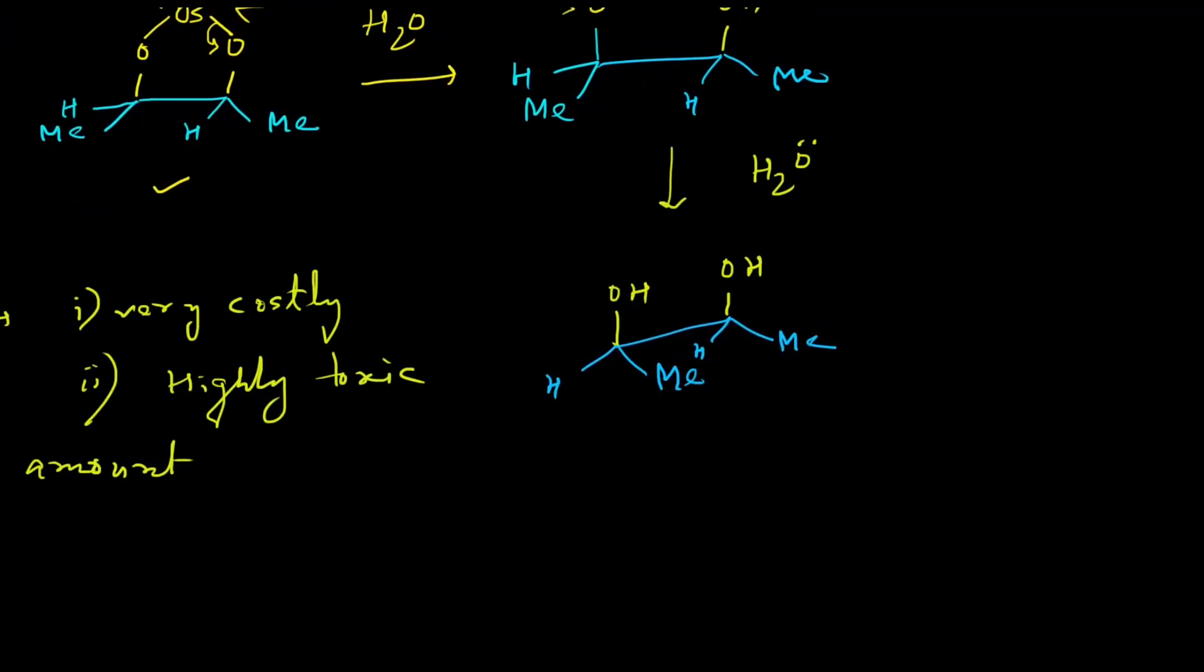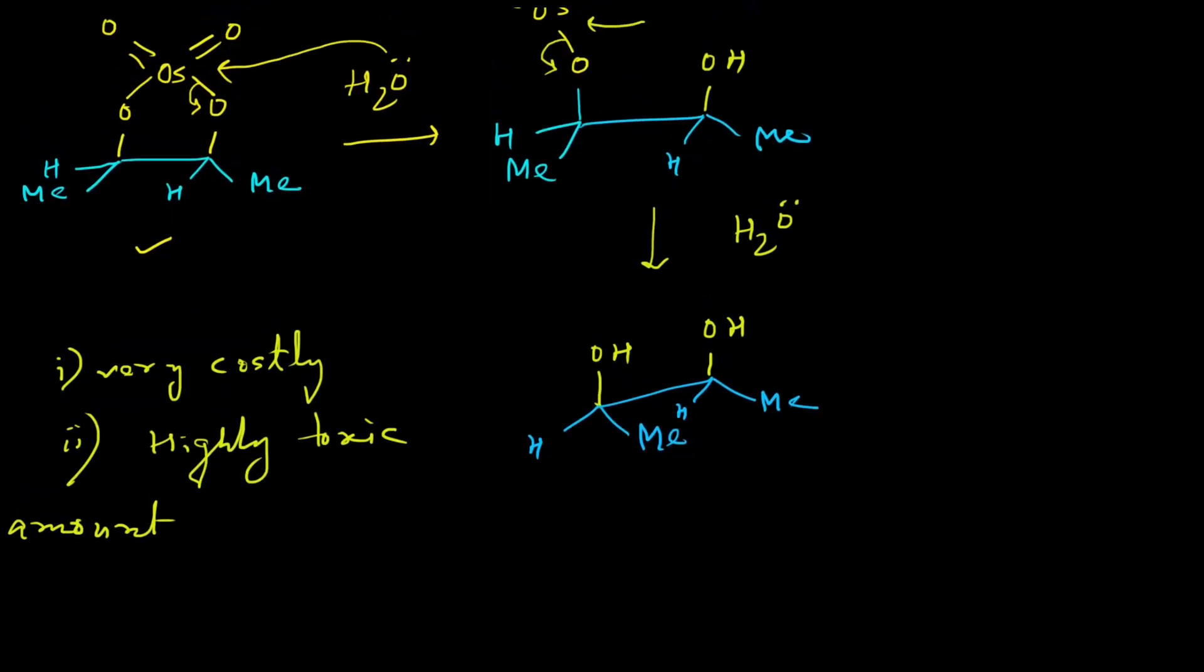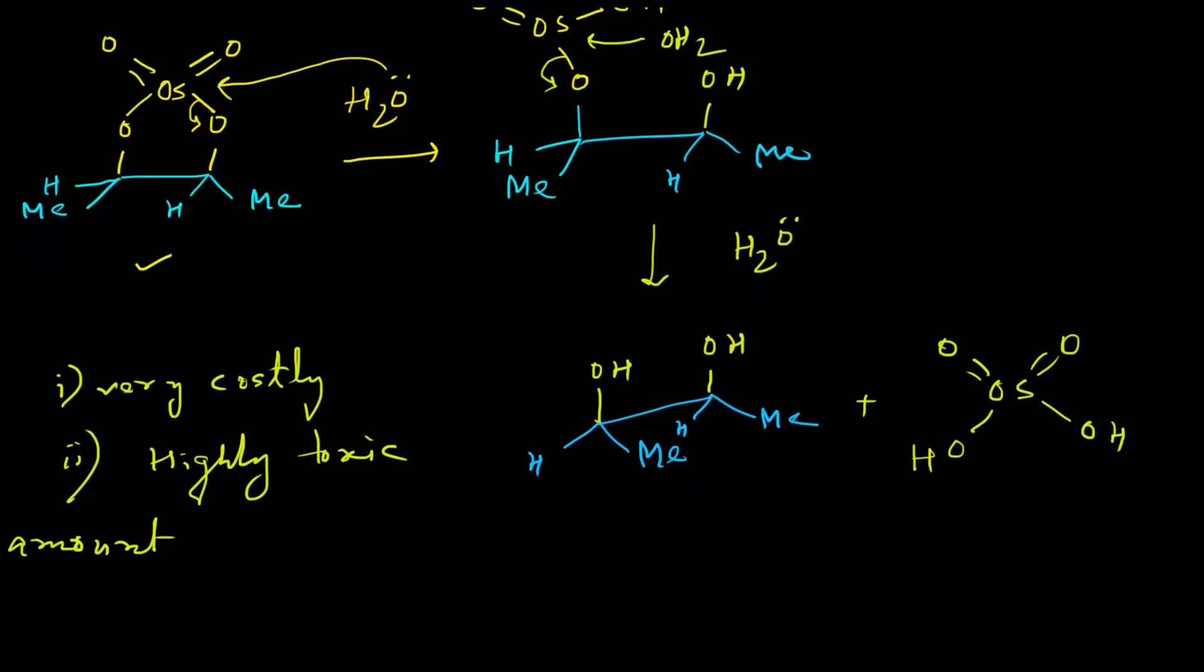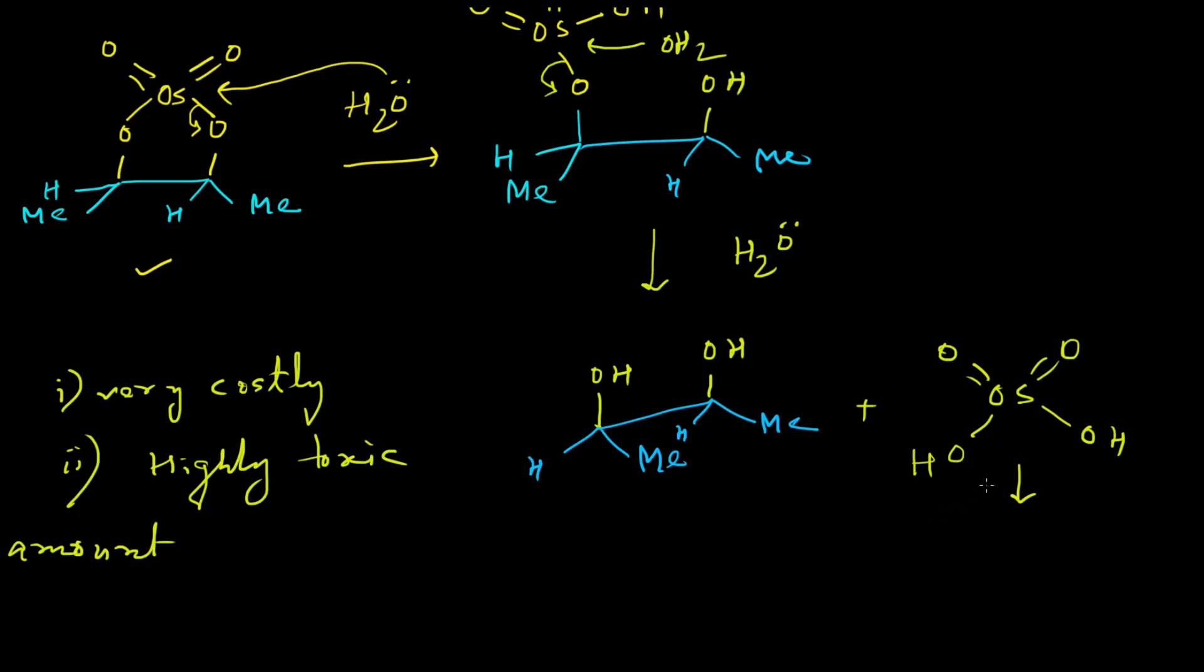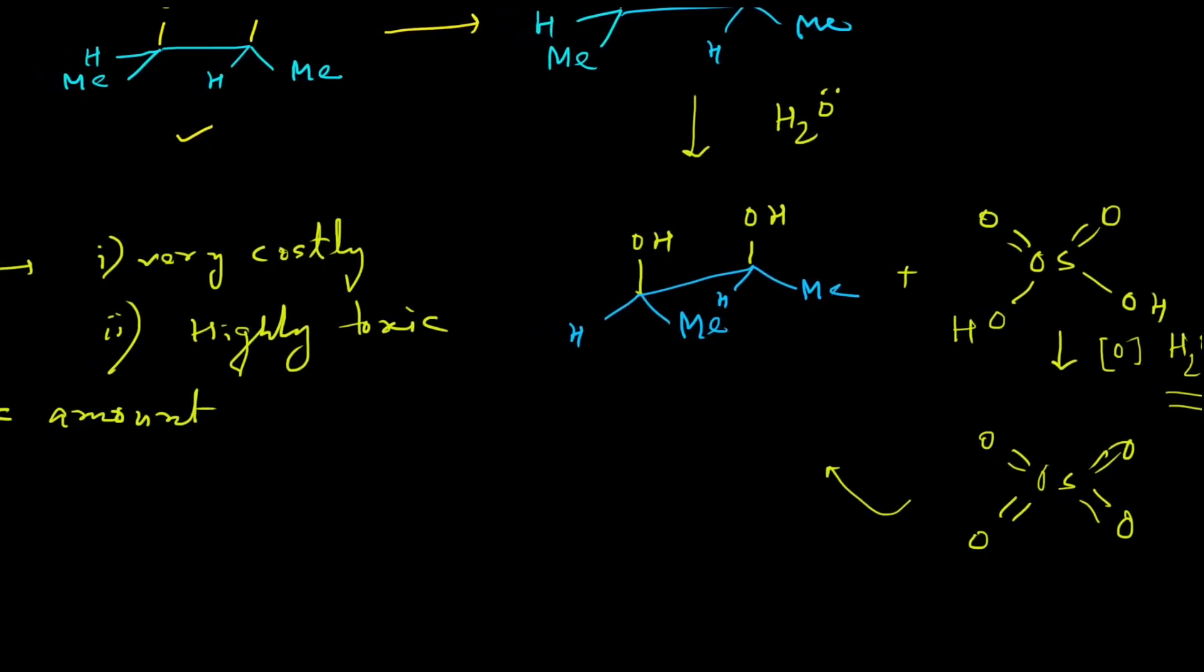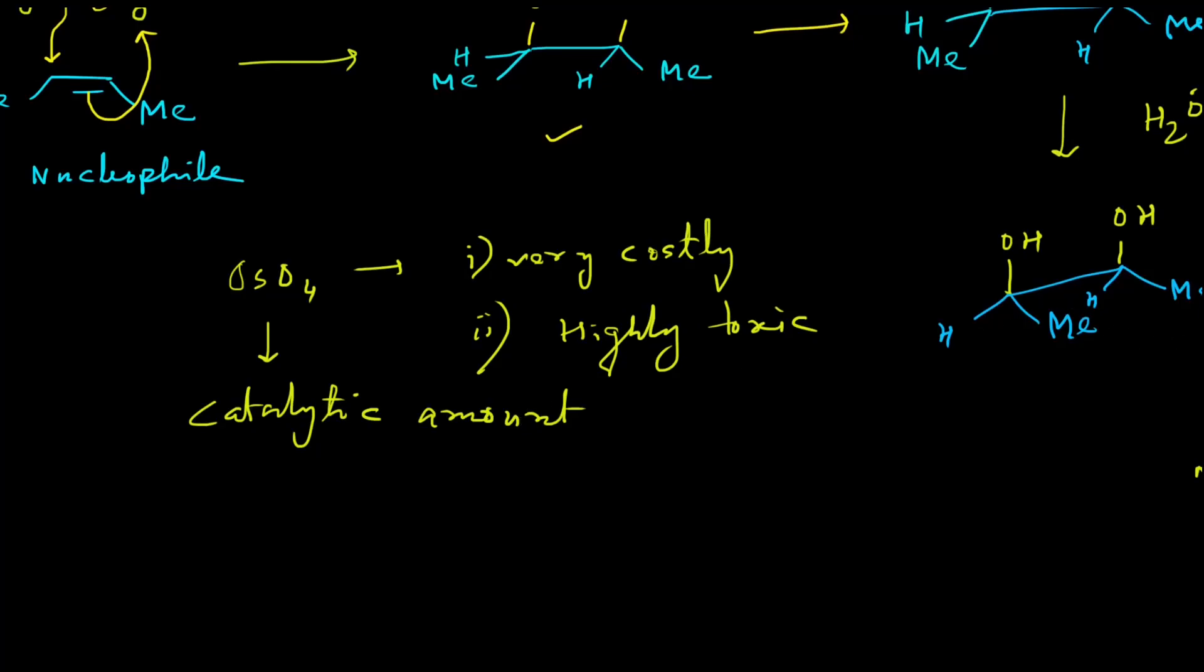We cannot use a very high quantity of osmium tetroxide during the reaction. One solution to this problem is we can use it in a catalytic amount. But if we use it in a catalytic amount, then after the reaction, you can see that osmium is reduced into this acid, where the oxidation state is now reduced by plus 2. So it cannot act as the oxidizing agent again.